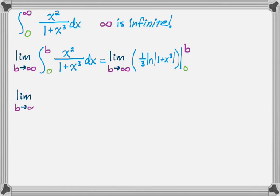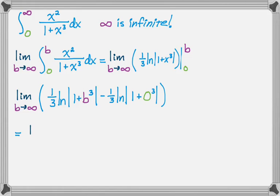And fundamental theorem on that would give me this. And if you look at it, the second part of this is 1 third natural log of 1, but the natural log of 1 is 0, so that actually just drops out. So really this limit is just the limit of 1 third natural log of 1 plus B cubed.